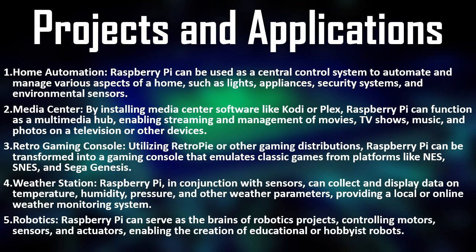Projects and Applications — Home automation: Raspberry Pi can be used as a central control system to automate and manage various aspects of the home, such as lights, appliances, security systems, and environmental sensors. Media center: by installing media center software like Kodi or Plex, Raspberry Pi can function as a multimedia hub, enabling streaming and management of movies, TV shows, music, and photos on a television or other devices.